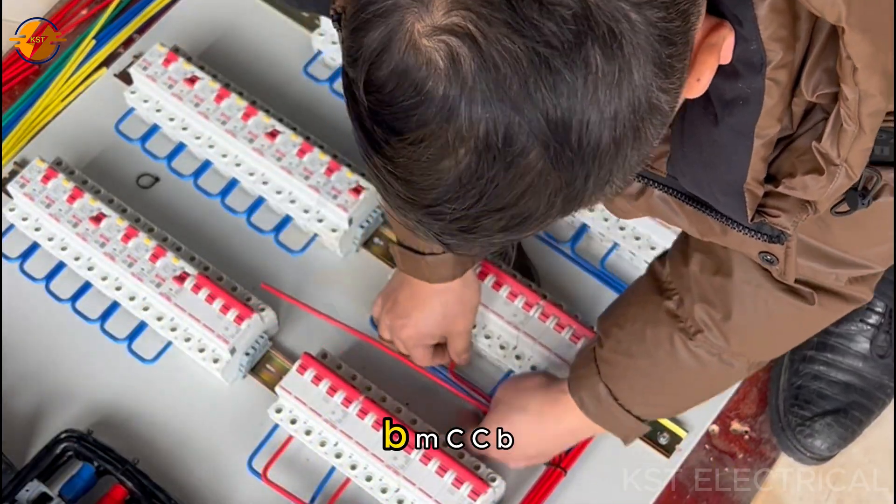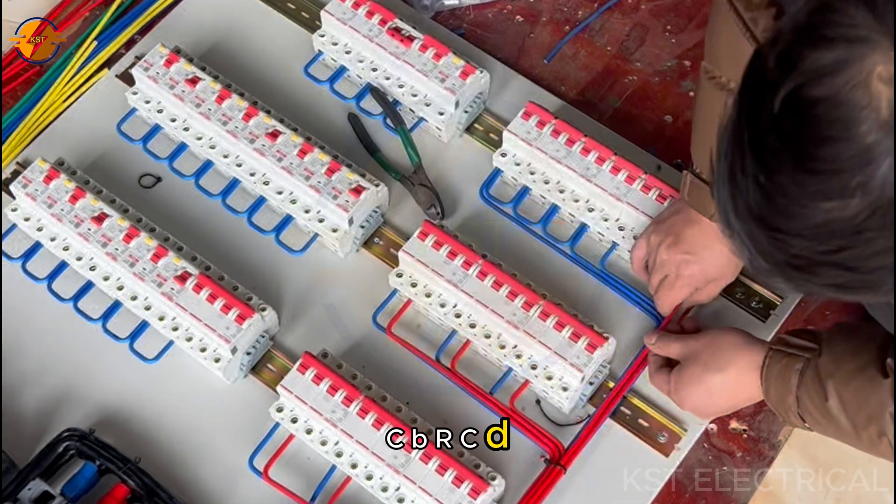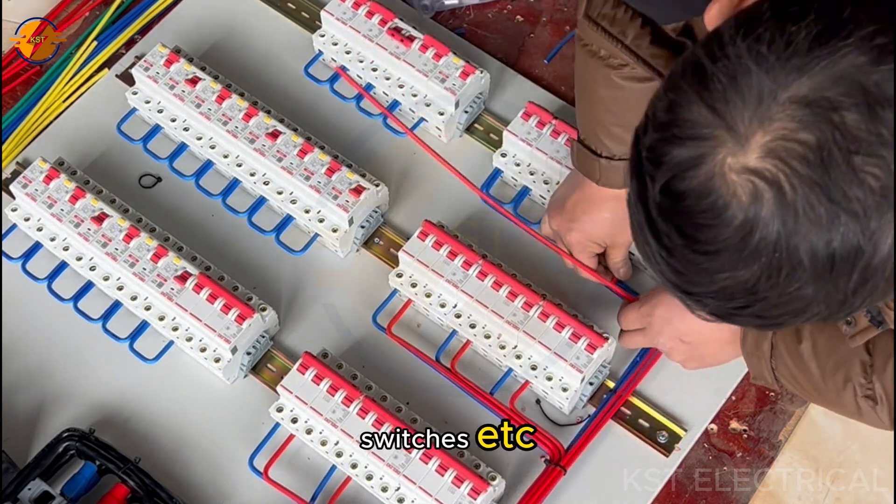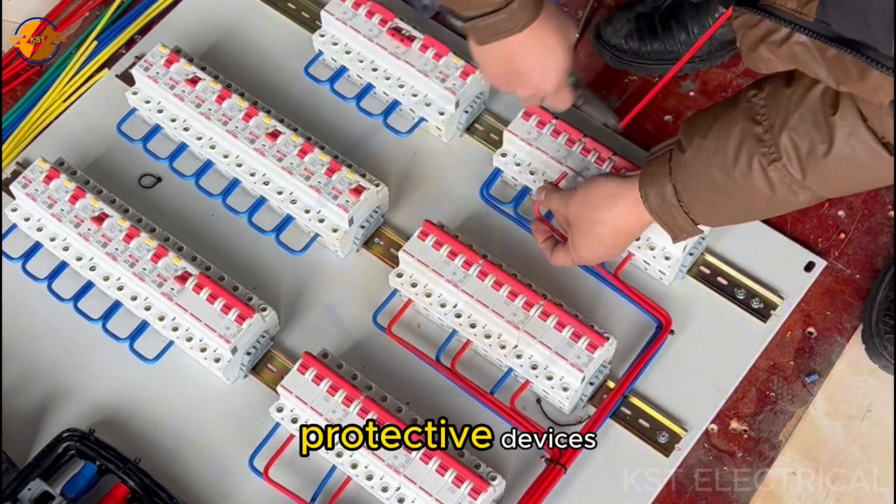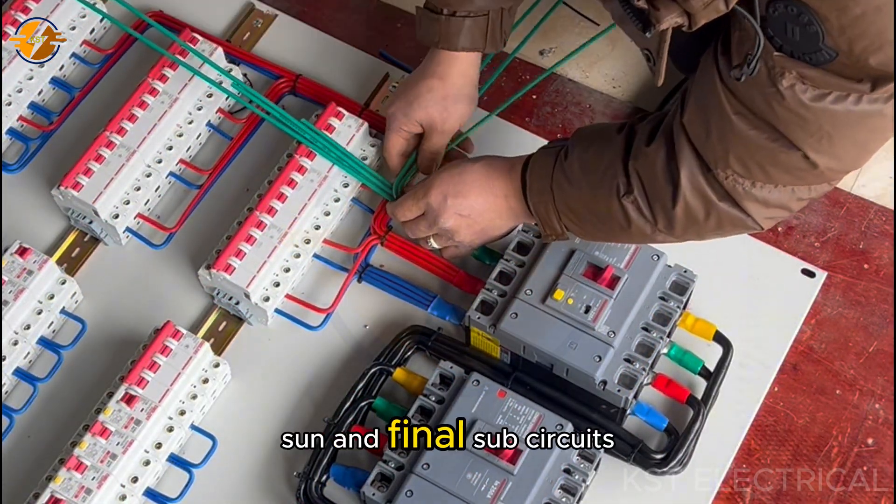RCD, MCB, MCCB, CB, RCBO, fuses, switches, etc. are used as controlling and protective devices in the main distribution board and final sub-circuits.